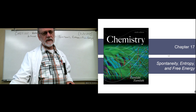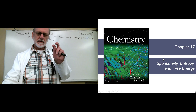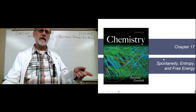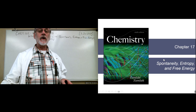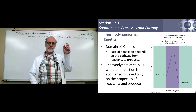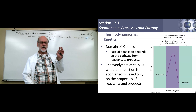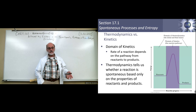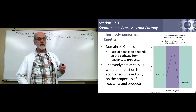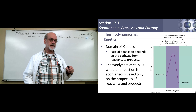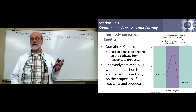What we're going to focus on in this chapter is spontaneity of reactions: what makes a reaction go from reactants to products? We've talked about that in terms of reactants having higher energy than products, but we can still get reactions going when the products are higher energy than the reactants, so it's kind of hard to explain that with energy alone.